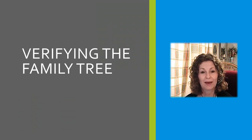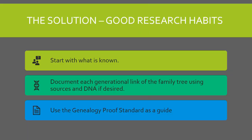Now let's talk about verifying the family tree. The solution to having a good family tree is having good research habits. First, start with what is known — determine everything you can about the family as your starting facts. Then move back on the family tree, documenting each generational link using sources. You may want to use DNA to verify those links, and you can use the Genealogy Proof Standard as a guide.